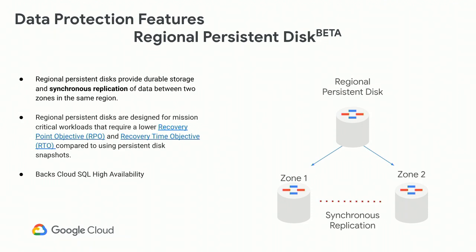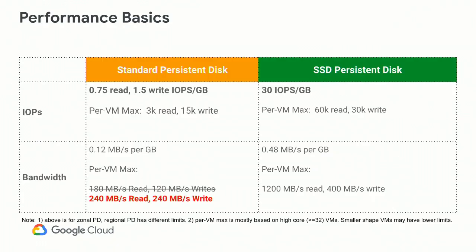Another feature coming at the end of the month is synchronous replication. Regional PD takes two copies of a PD in two different zones, and all writes are synchronized in the backend. Before a write is acknowledged back to the host, it's synchronized across both sides. This feature is targeted towards applications highly sensitive to recovery point and recovery time objectives.